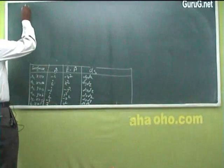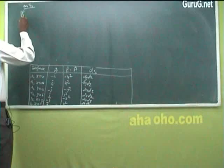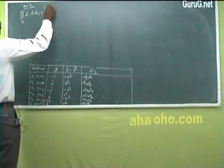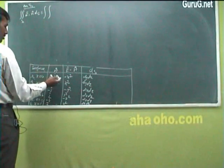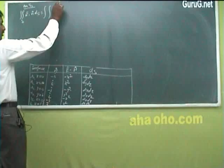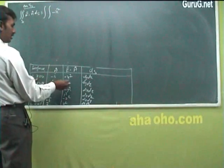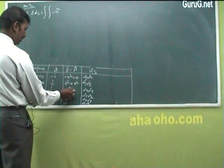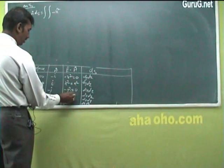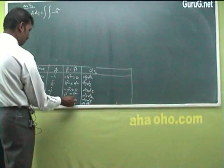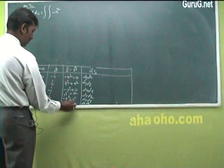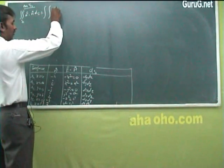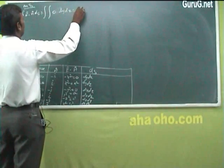On S1 (x = 0): the integral of F·n̂ dS equals the integral of −x² dy dz. Since x = 0, −x² = 0, so the integral over S1 equals 0.